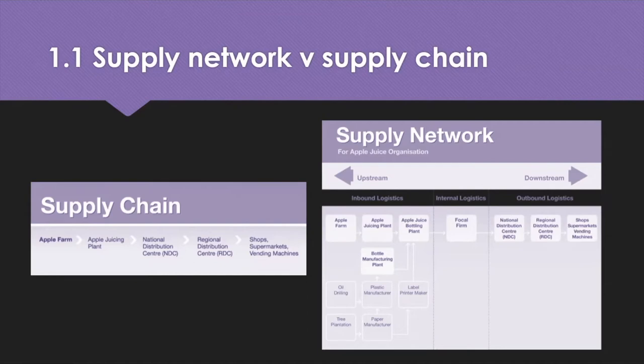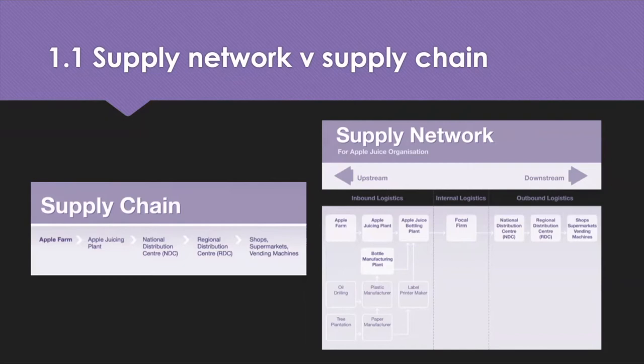Sticking with the bottled water supply chain, outside of the main supply chain, plastic suppliers provide raw materials for bottles and labels, and logistics companies provide warehousing, transport and repackaging. There are lots of different information and parts flowing backwards and forwards. Another example shows an apple juice organization buying apples from a farm, putting it through plants and distribution centers, and into supermarkets — but there are other parties that get involved in that supply chain network.